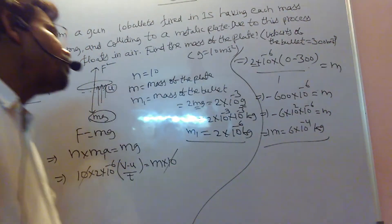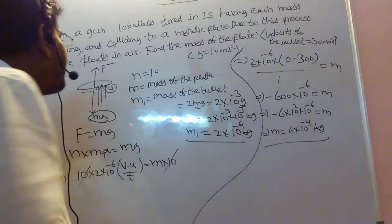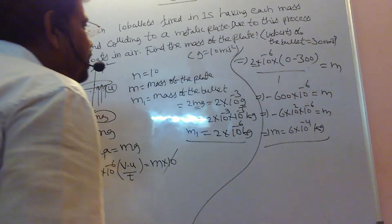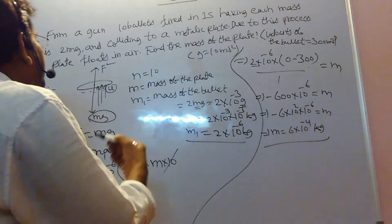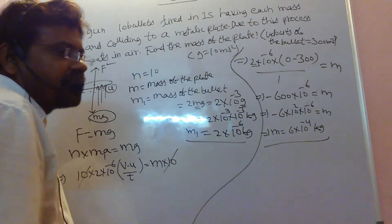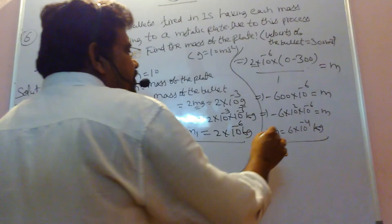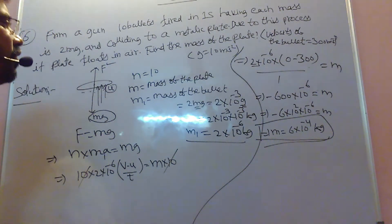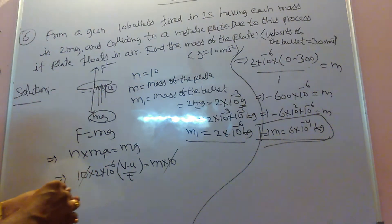Here, why did minus come? Bullet is exerting some force that is opposite to weight. Due to that, we are getting minus. One direction if we take positive. Due to that minus comes. So mass equals 6 into 10 power minus 4 kilograms. This is the mass of the plate that floats in the air.